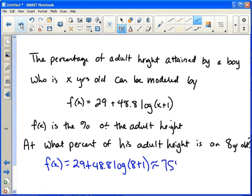Someone commented in class that that seemed pretty tall for an 8 year old to already be at 75% of the adult height. But if you think about it, 75% is not all that tall. If someone is going to grow to be 6 feet tall, 75% is just 4.5 feet tall. So that's not necessarily all that tall for an 8 year old.